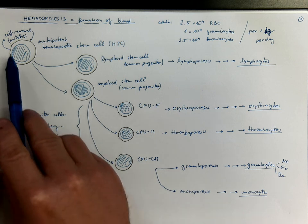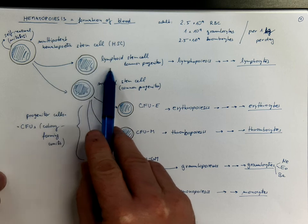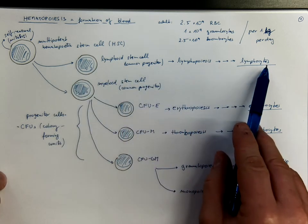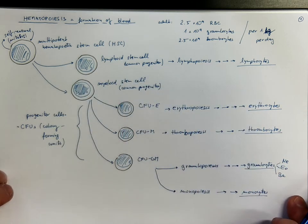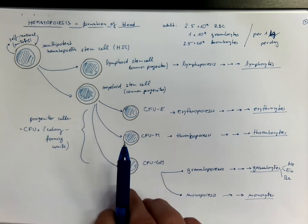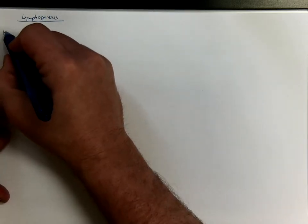Now let us follow the lineage of lymphopoiesis with lymphocytes at the end. So it starts with the hematopoietic stem cell.